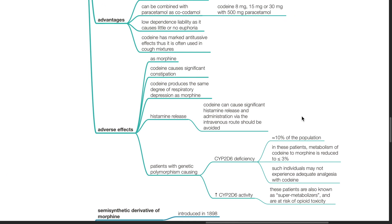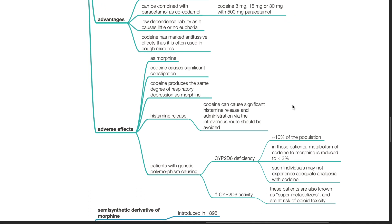Adverse effects as morphine. Codeine causes significant constipation. It produces the same degree of respiratory depression as morphine. Histamine release. Codeine can cause significant histamine release and administration via IV route should be avoided.